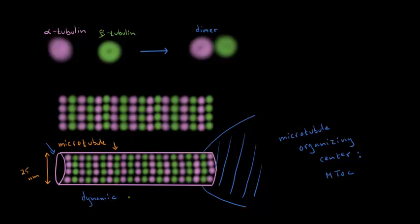There are actually different types of microtubule organizing centers, and we're going to talk about two. The first is the centrosome, and the second is called a basal body. Centrosomes and basal bodies are pretty similar in structure, but the microtubules attached to them carry out different functions.